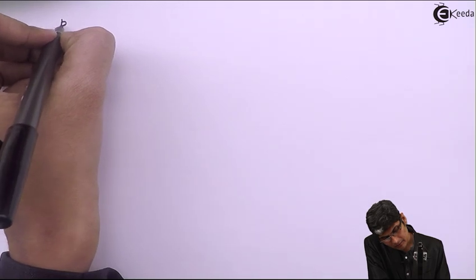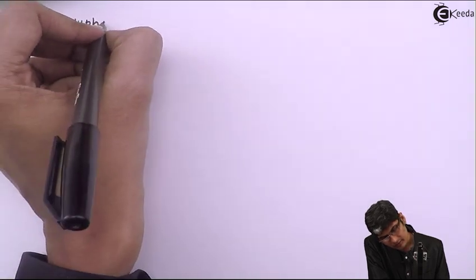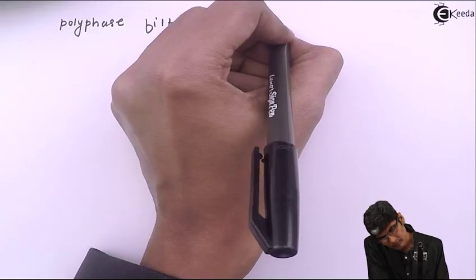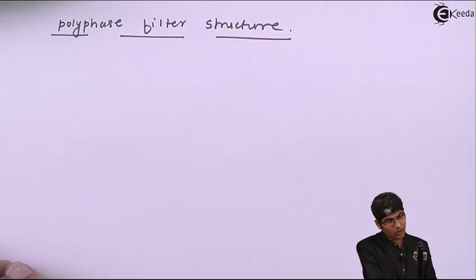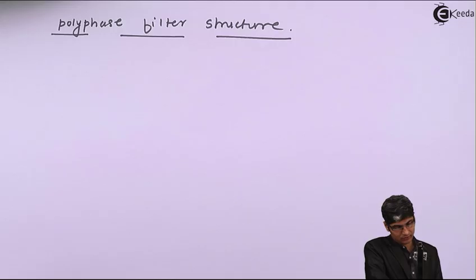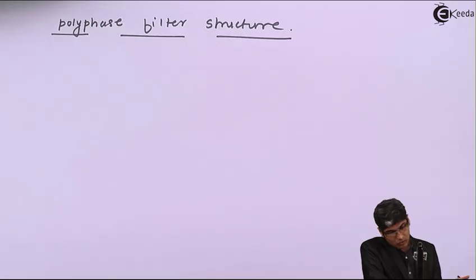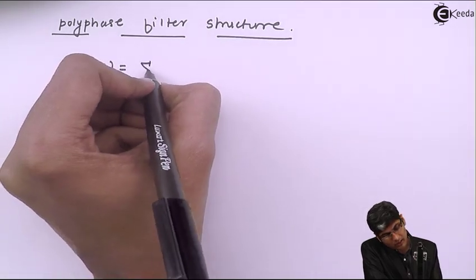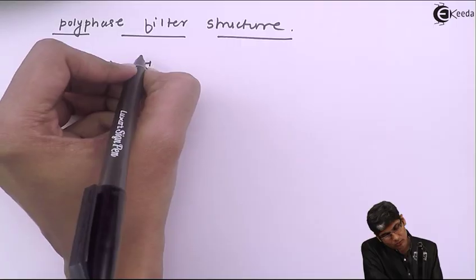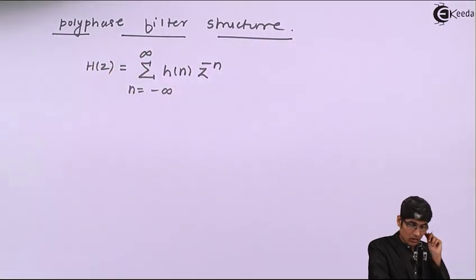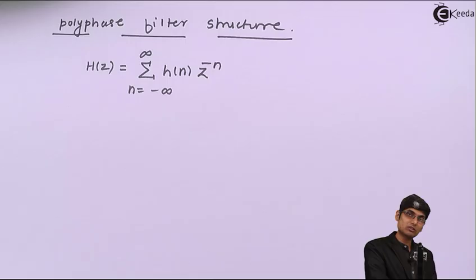Let us understand how to analyze a filter structure using polyphase. In a polyphase filter structure, let us start with an FIR structure. Consider a transfer function H(z) equal to the summation from n going from minus infinity to plus infinity of h(n) z raised to minus n. This is the transfer function of a given filter.